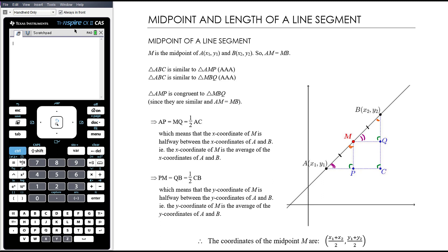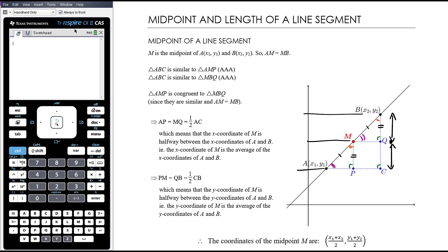Because AMP and MBQ are similar and also share a side length that is the same, they must be congruent — they are essentially the same triangle, with the same lengths and same angles. So if they are congruent, that tells us that certain lengths must be equal, which means the Y coordinate of M is halfway between the two Y coordinates of A and B.